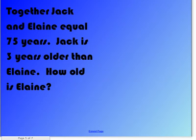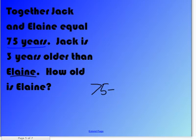Together, Jack and Elaine's ages equal 75 years. Jack is 3 years older than Elaine. How old is Elaine? So you have to do the same thing again. You subtract 3 from 75, and you get 72.